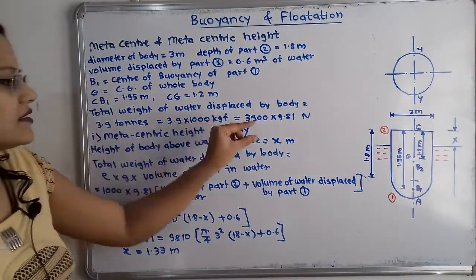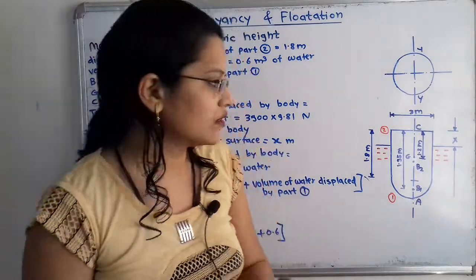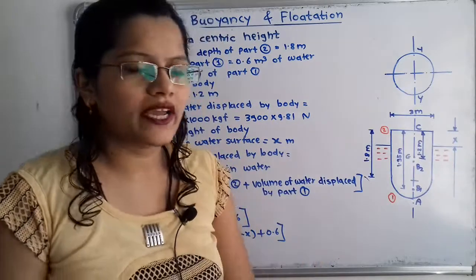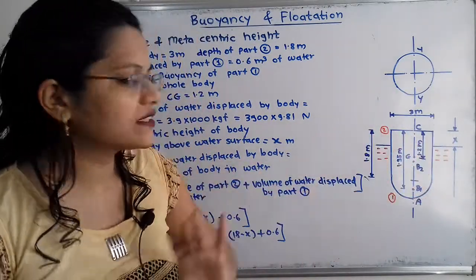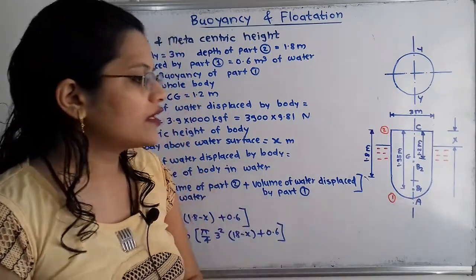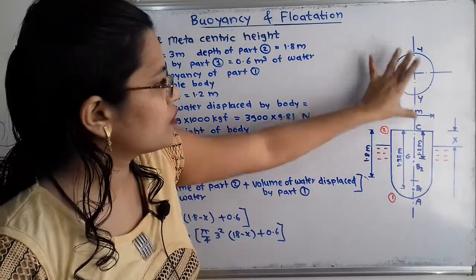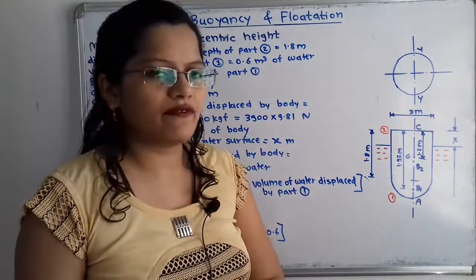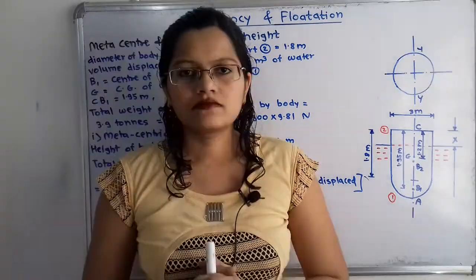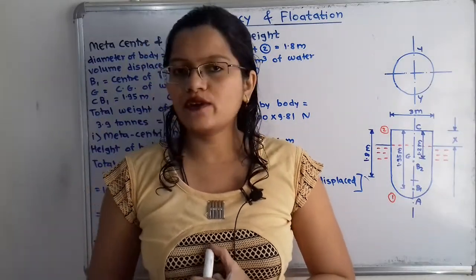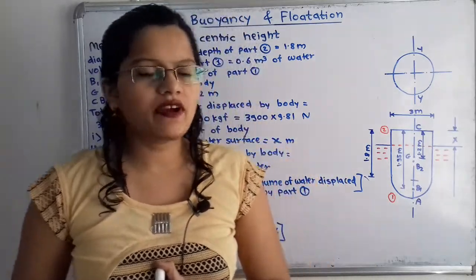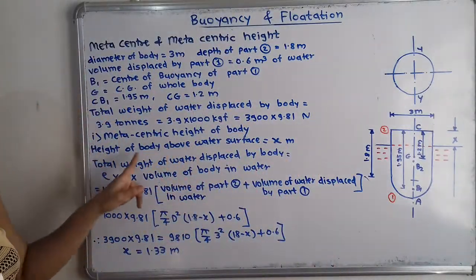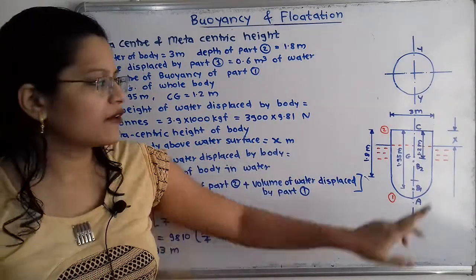Now we have to find the metacentric height of the body. First we need to find x, the height of the body above the water surface. We consider height x above the water surface. The diagram shows height above the water surface as x, point A at the bottom, the circular face of the cylindrical part, and the vertical axis YY.